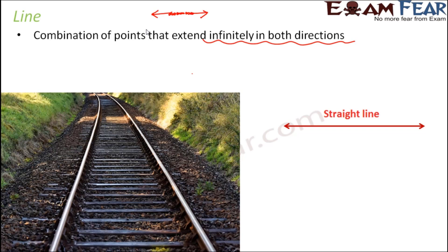A straight line is often represented with an arrow on both ends, which shows that it is extending in both directions. Now, it is not necessary that a line always has to be a straight line — it can be a curved line as well, because in the definition, nowhere do we say that the points should form a straight line. It is just a combination of points such that it extends in both directions. Even in case of a curved line, it can extend in both directions, so it is also a line.